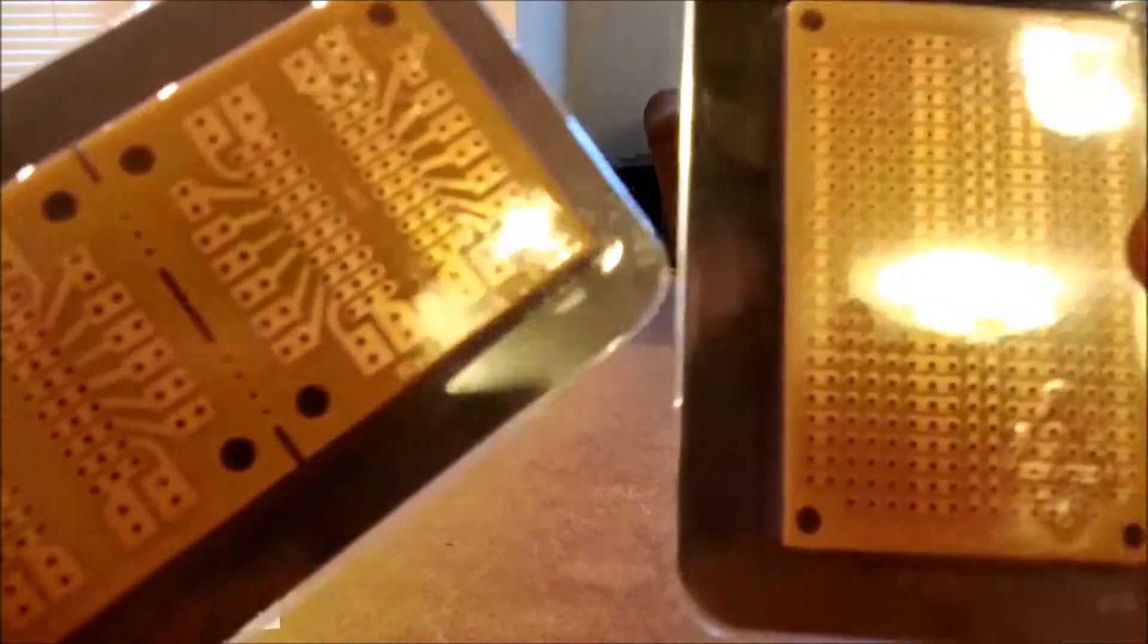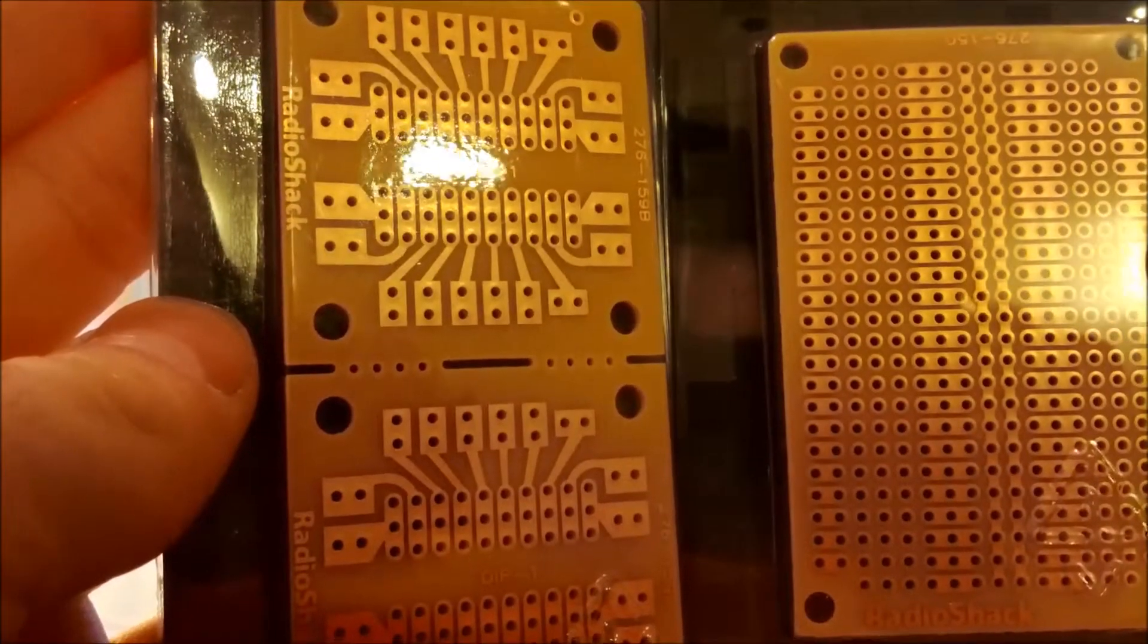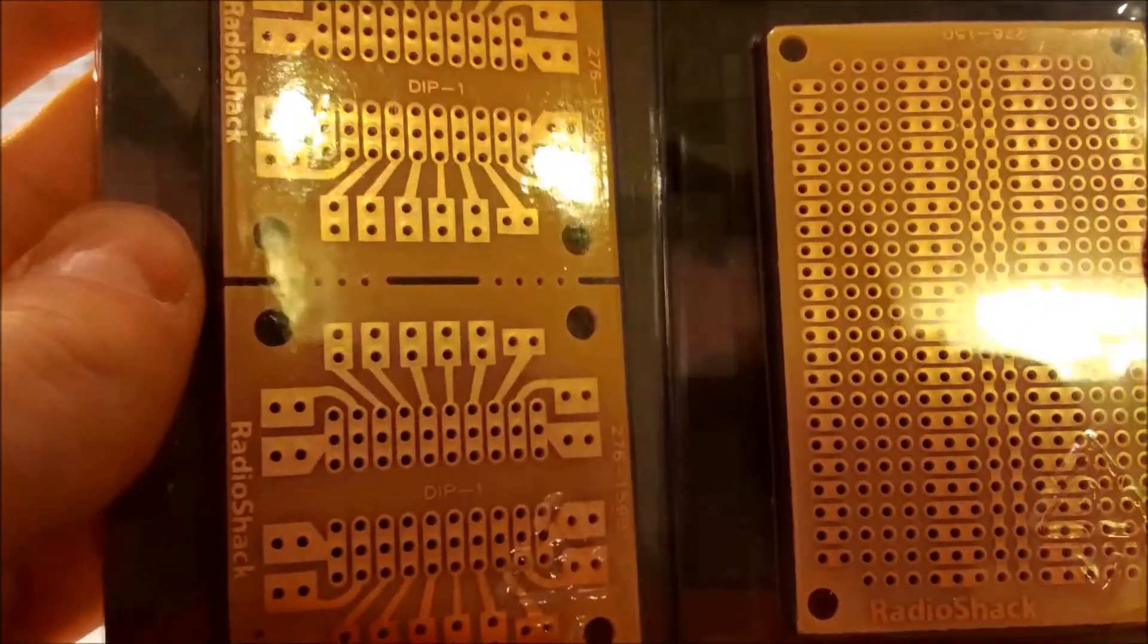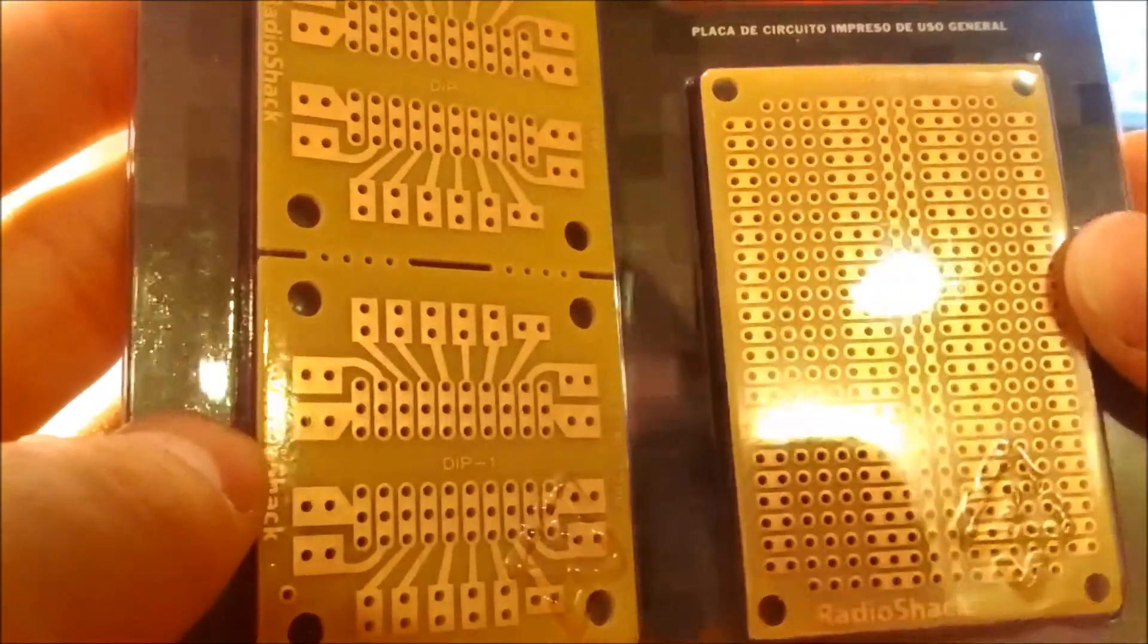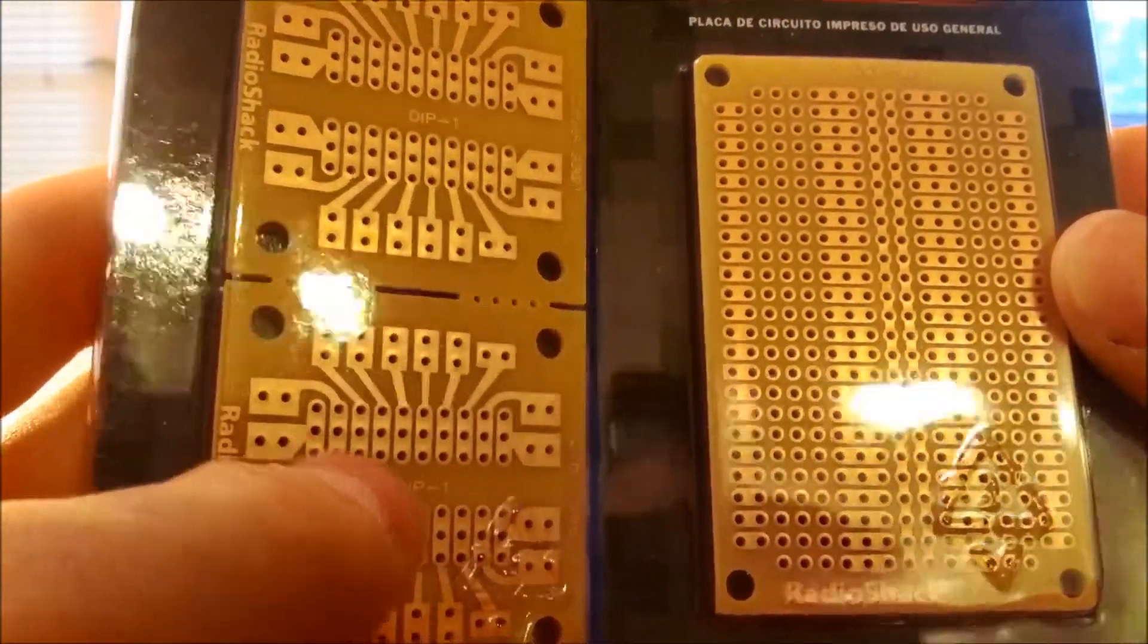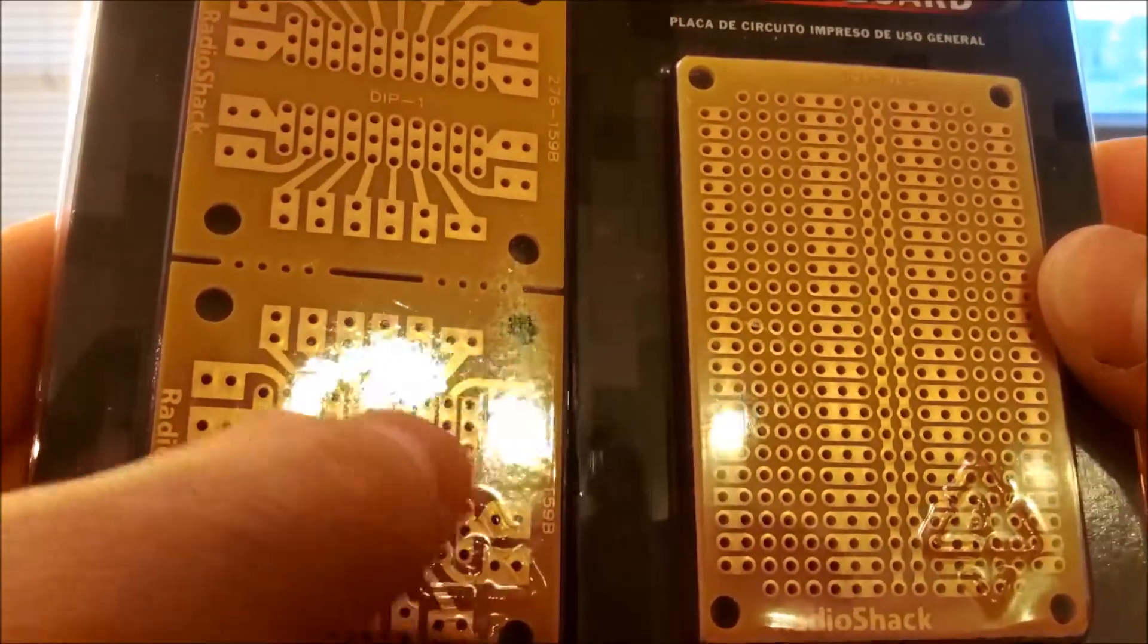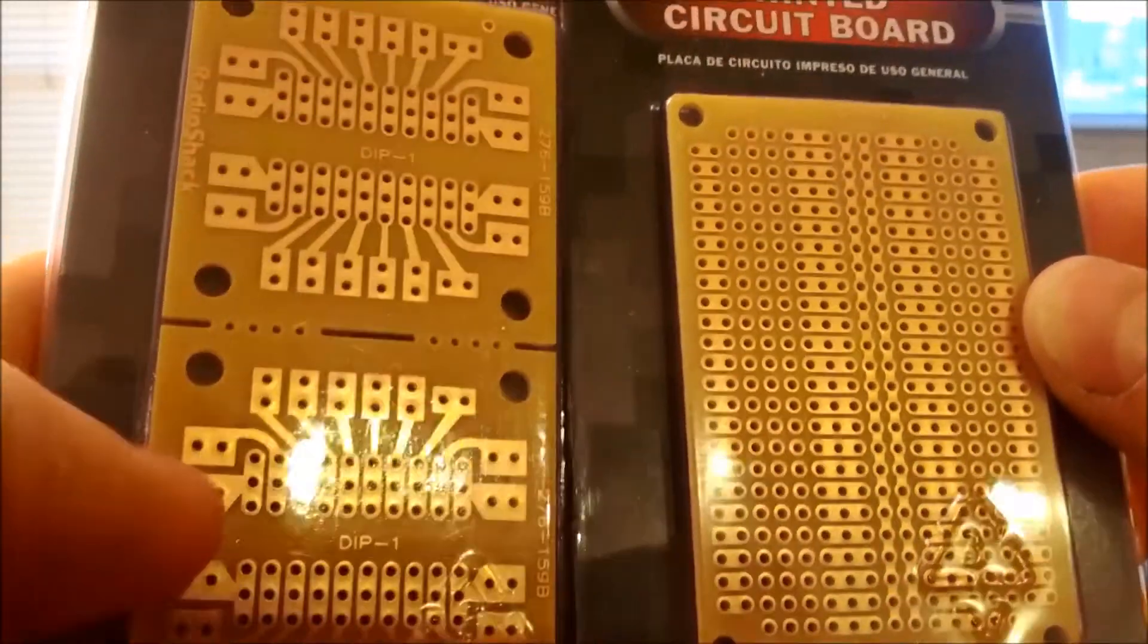Two general-purpose printed circuit boards to make some small circuits and put them in enclosures. Not sure what I'm going to use them for, but they were a dollar and something, ridiculously cheap. So I got them because I will be needing them. This one's especially good for breaking out all the pins on some sort of microcontroller or just a general chip.